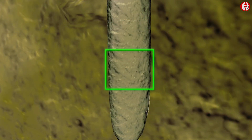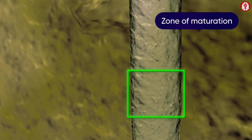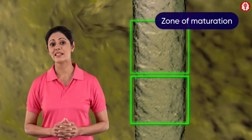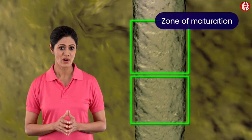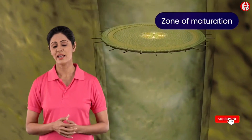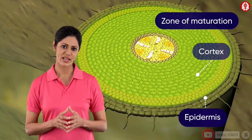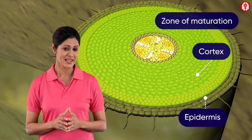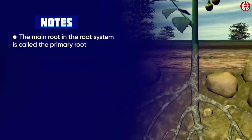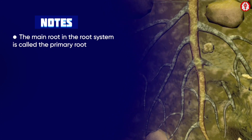Above the zone of elongation we find the zone of maturation. The cells of this region are mature and differentiated into the outer epidermis, the middle cortex, and the inner vascular tissue.